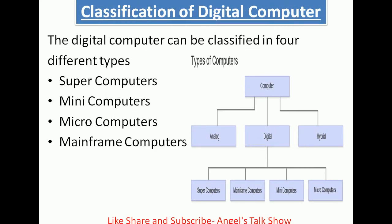Now, classification of digital computers. The digital computer can be classified into four different types: supercomputer, minicomputer, microcomputer, and mainframe computer. In the diagram we can clearly see that computers are defined into three main categories — analog, digital and hybrid — and further, digital computers are divided into supercomputer, mainframe computer, minicomputer and microcomputer.